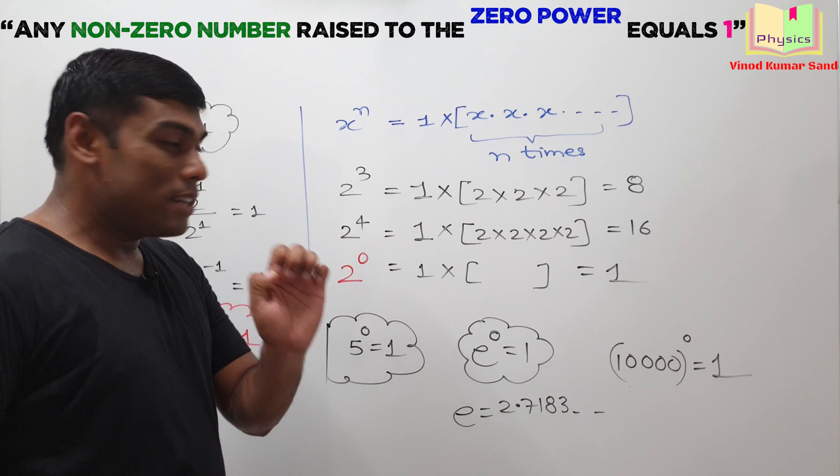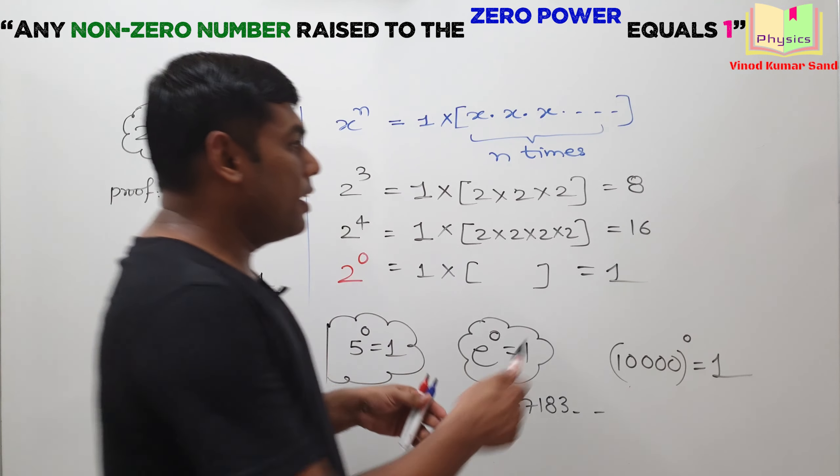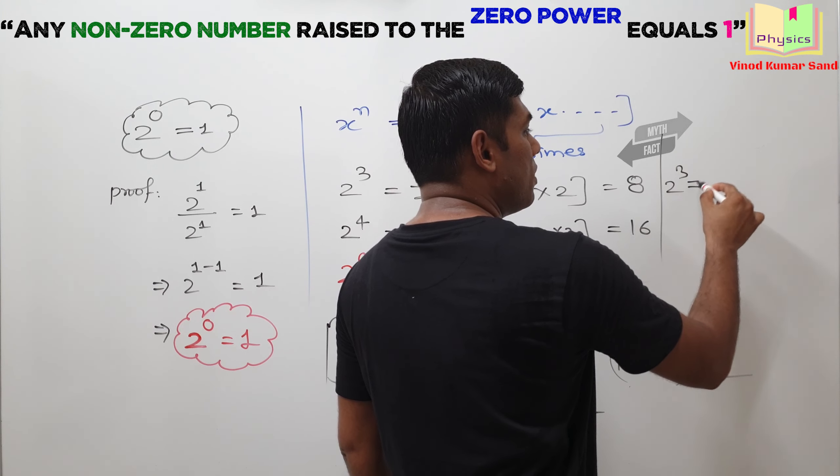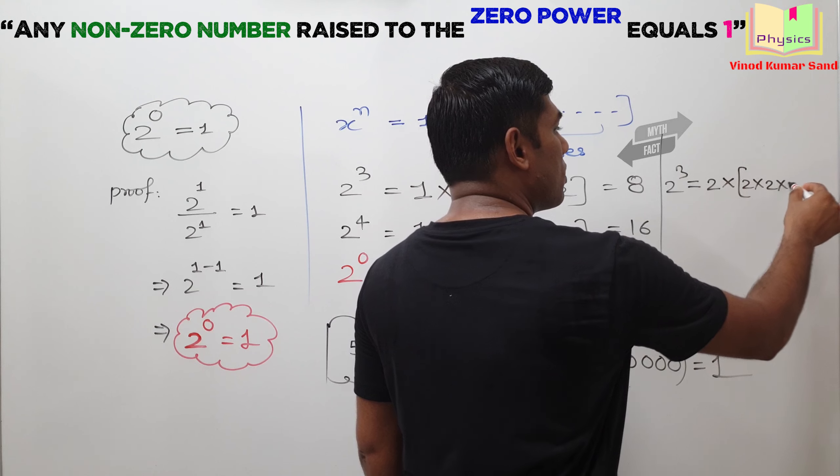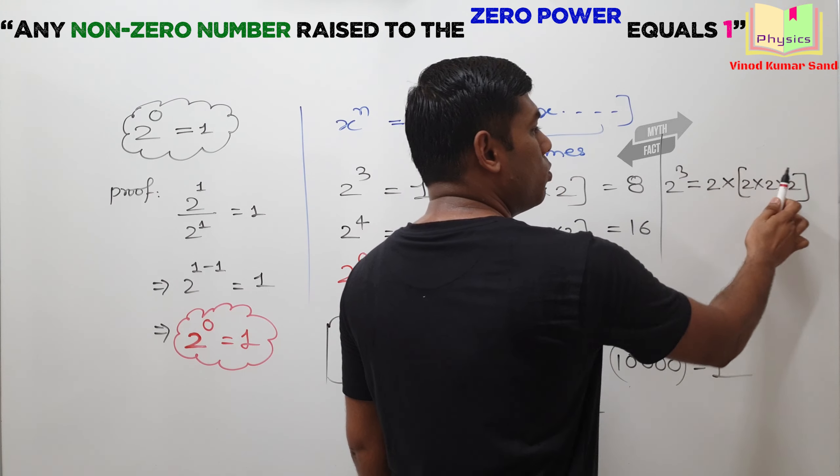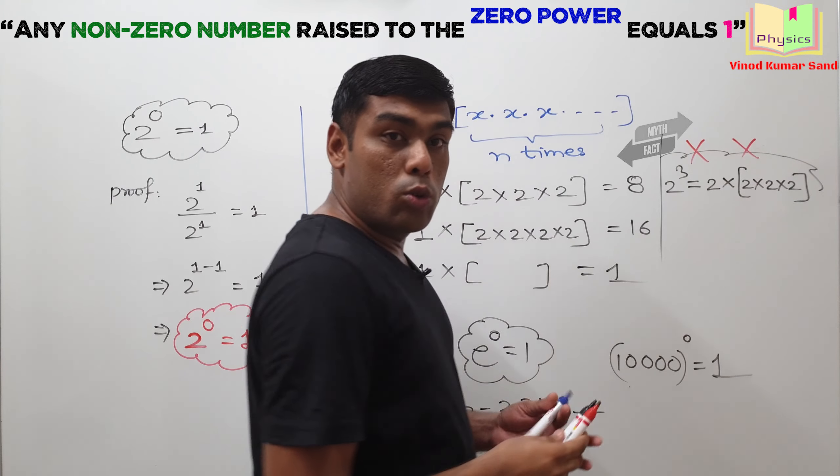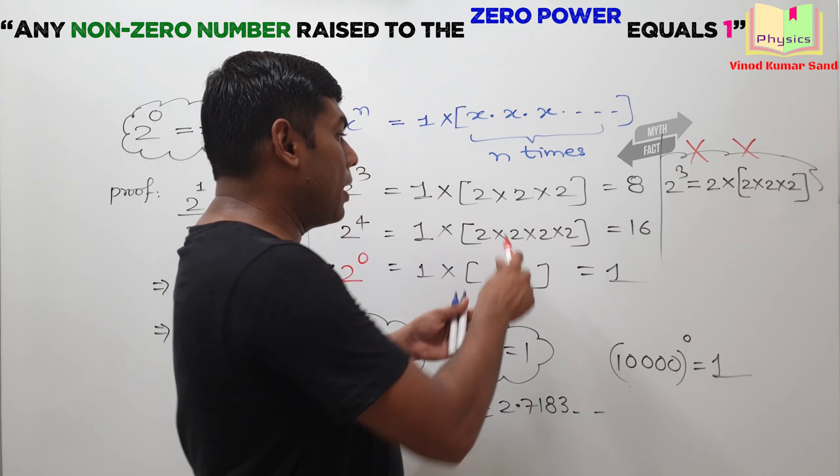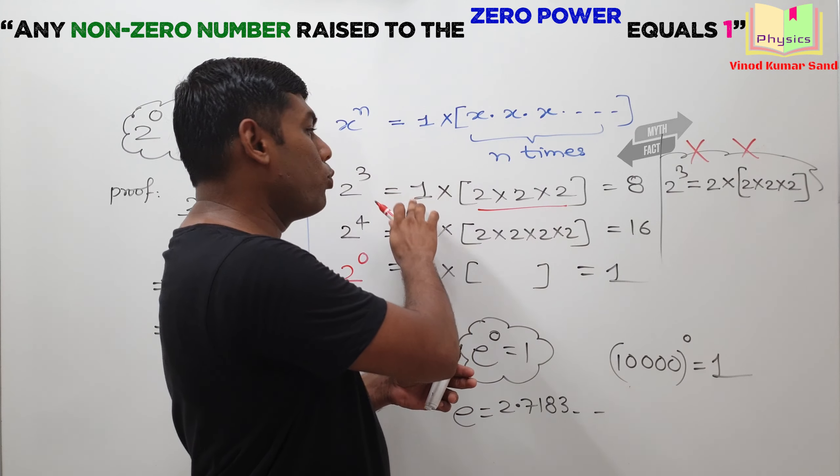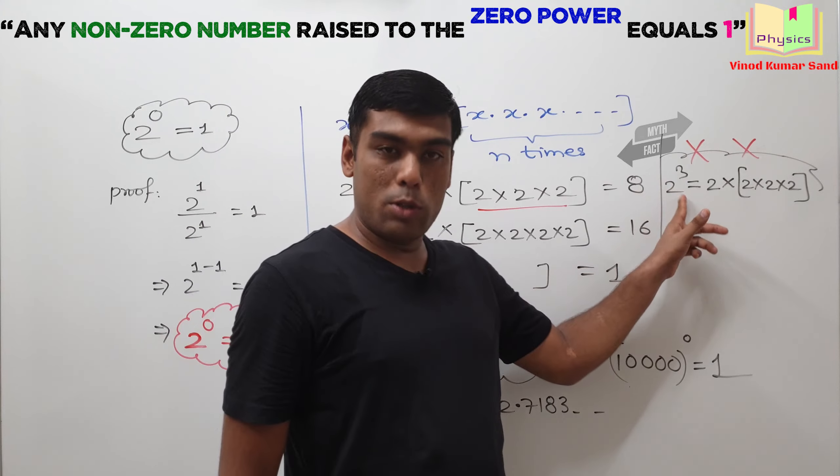Few students have misconception about these computation. They think that 2 cube means 2 is multiplied 3 times with 2. This is actually wrong. 2 cube actually means 2 is multiplied 3 times with 1. Do not have that misconception.